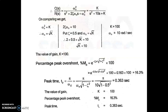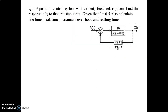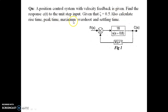The next problem: a position control system with velocity feedback is given. Find the response c(t) to a unit step input given that ζ = 0.5. Also calculate rise time, peak time, maximum overshoot, and settling time. G(s) and H(s) are given, and we need to find the output c(t) for the unit step input.